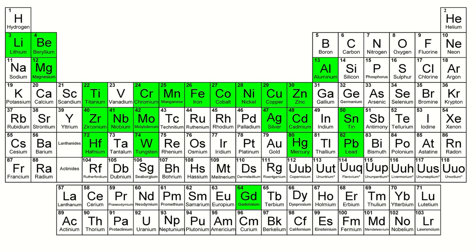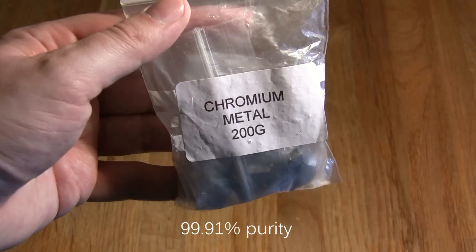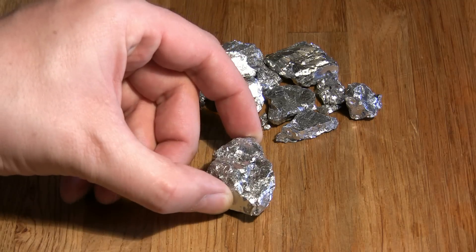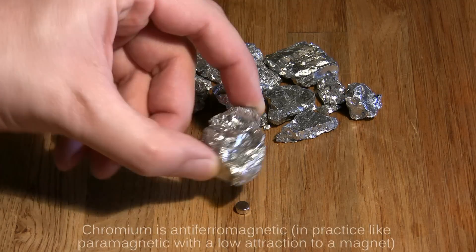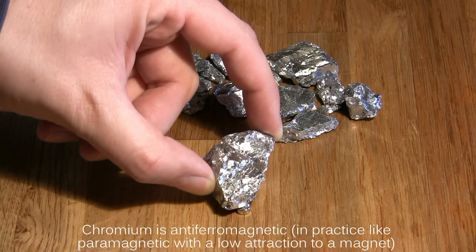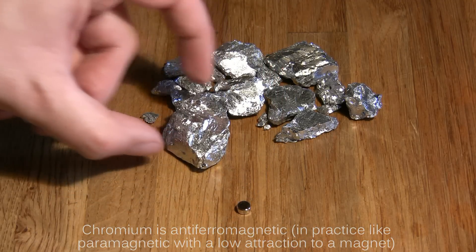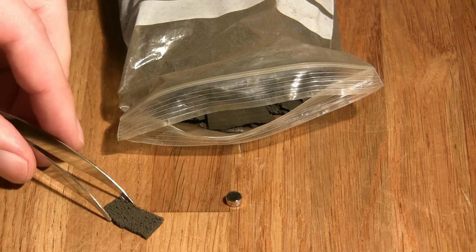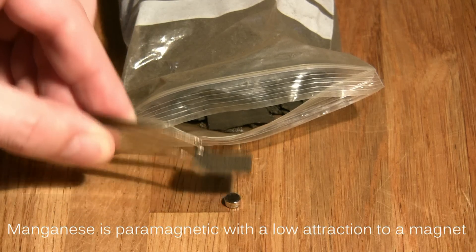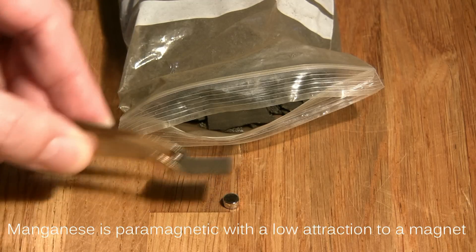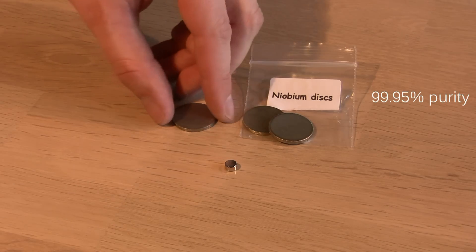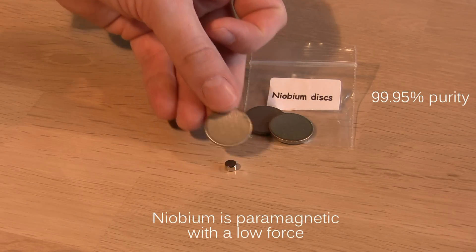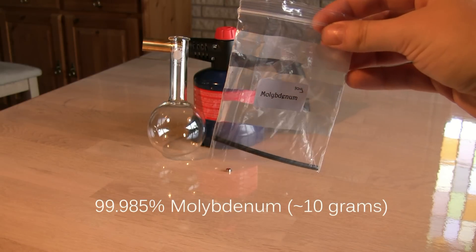Now for some more of the transition metals. The antiferromagnetic and beautiful chromium. The brittle manganese. The superconducting niobium. And the hard to melt molybdenum.